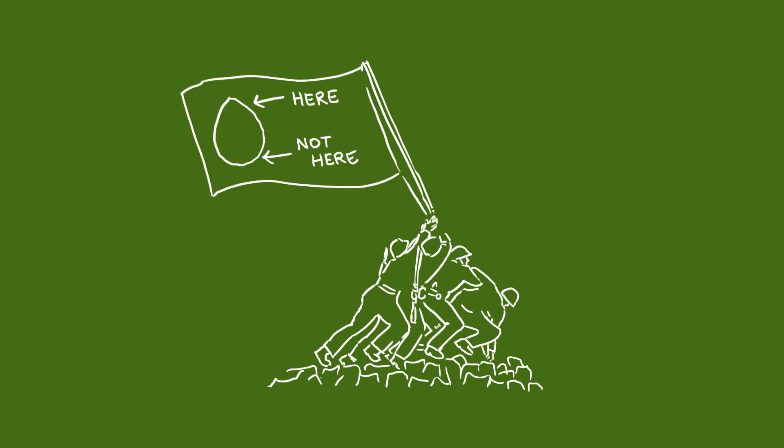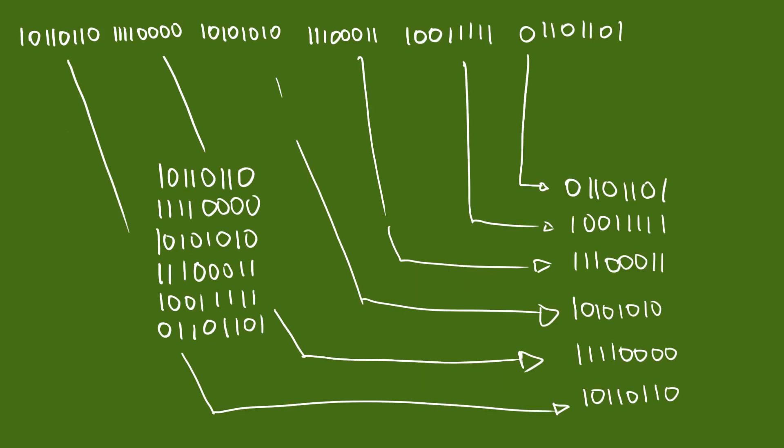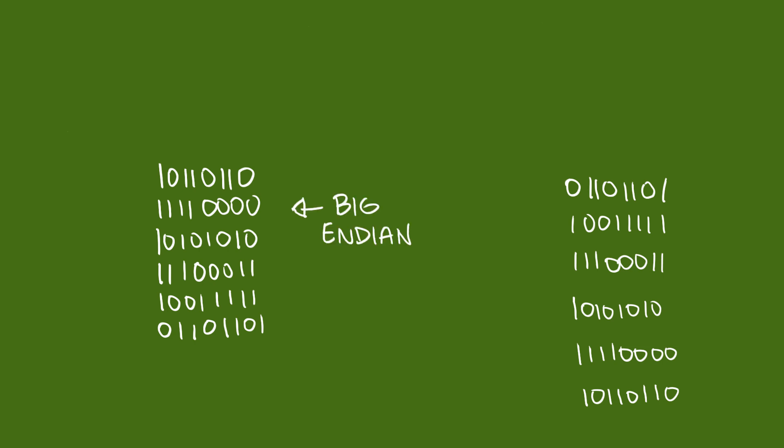In 1980, Danny Cohen, a programmer with the IEEE, pointed out that arguing about bit order like this was exactly as silly. He assigned this scheme the name Big Endian because the largest value in the series came first, and this scheme the name Little Endian because the smallest value in the series came first.